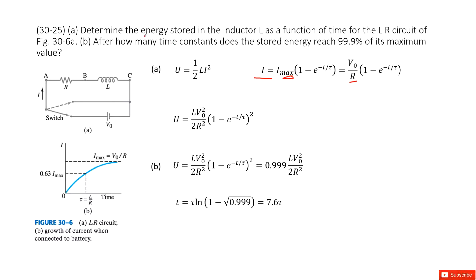So part A, the question asks you to determine the energy stored in the inductor L as a function of time t. By definition, we know the energy stored in the inductor L is 1/2 L i squared. So very easily we can input the i inside and we get the final answer.